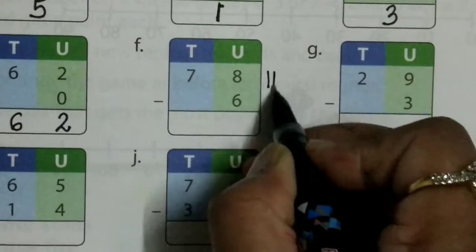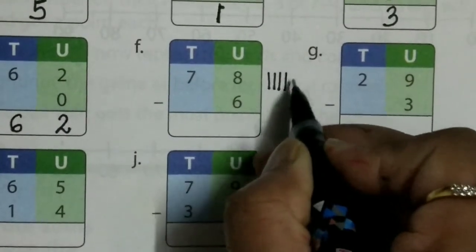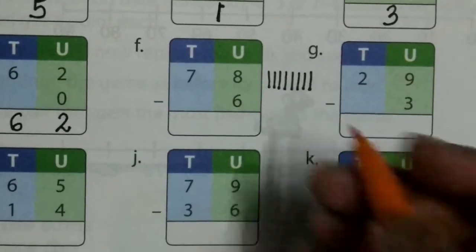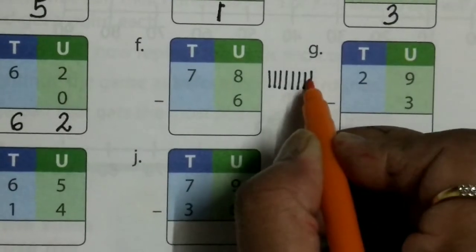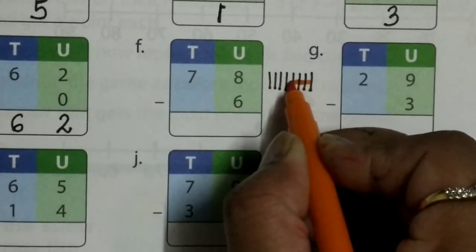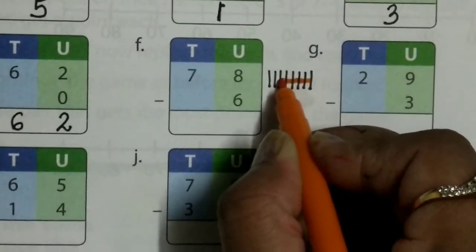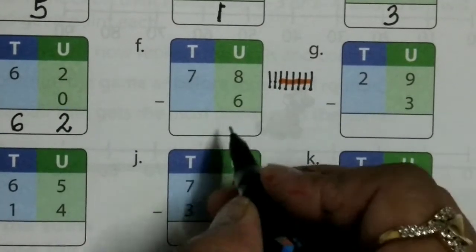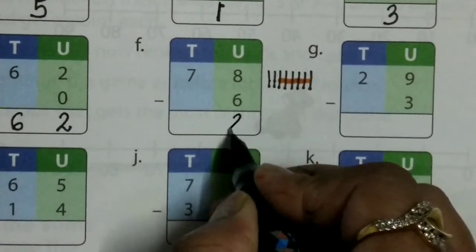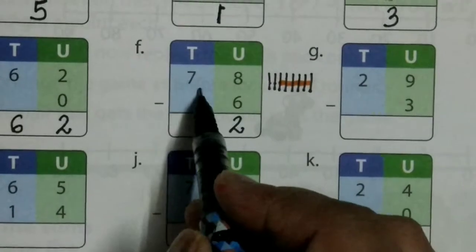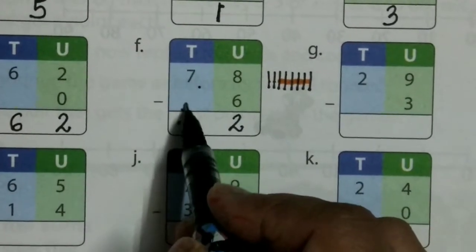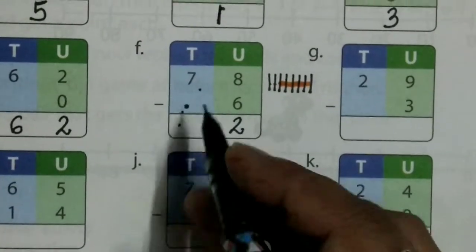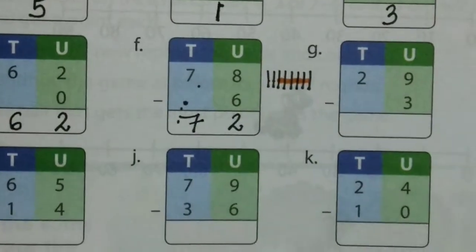8 minus 6: draw 8 lines — 1, 2, 3, 4, 5, 6, 7, 8. From it take away 6: 1, 2, 3, 4, 5, 6. How many lines remaining? 1, 2. So 8 minus 6 will be 2. For 7 minus 0 — we have no number to subtract, so it will be 7. When we subtract 0 from it, it will be the same: 7.